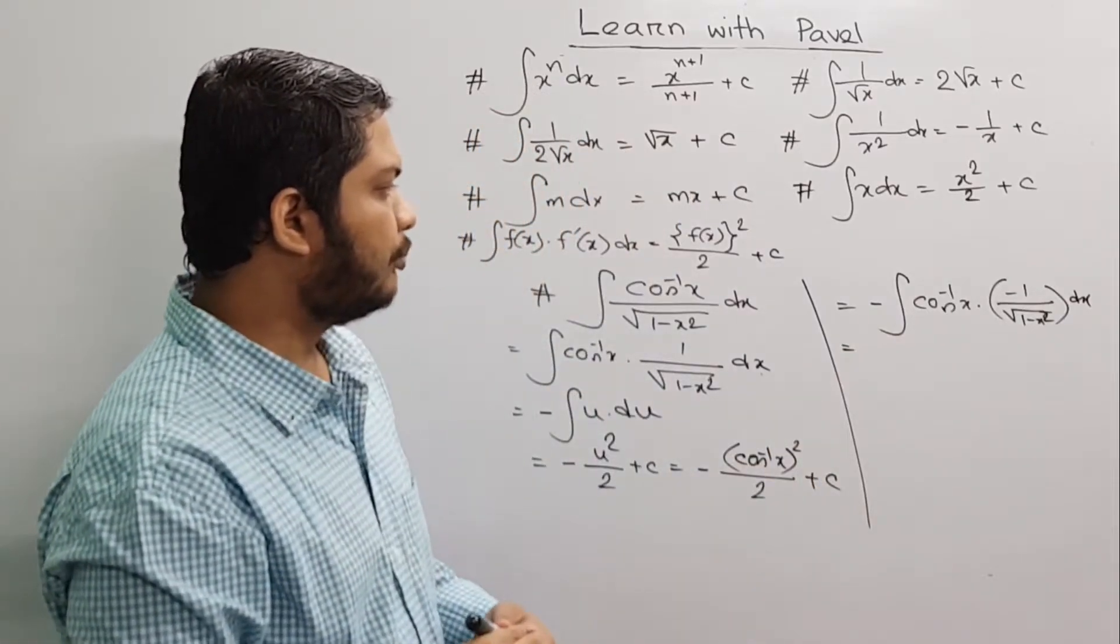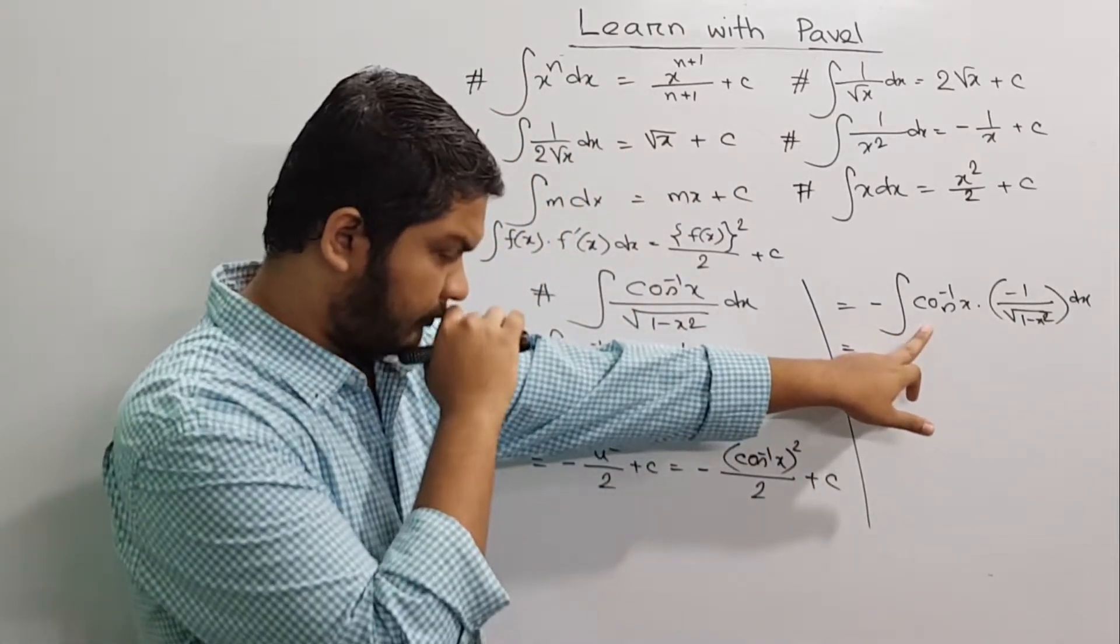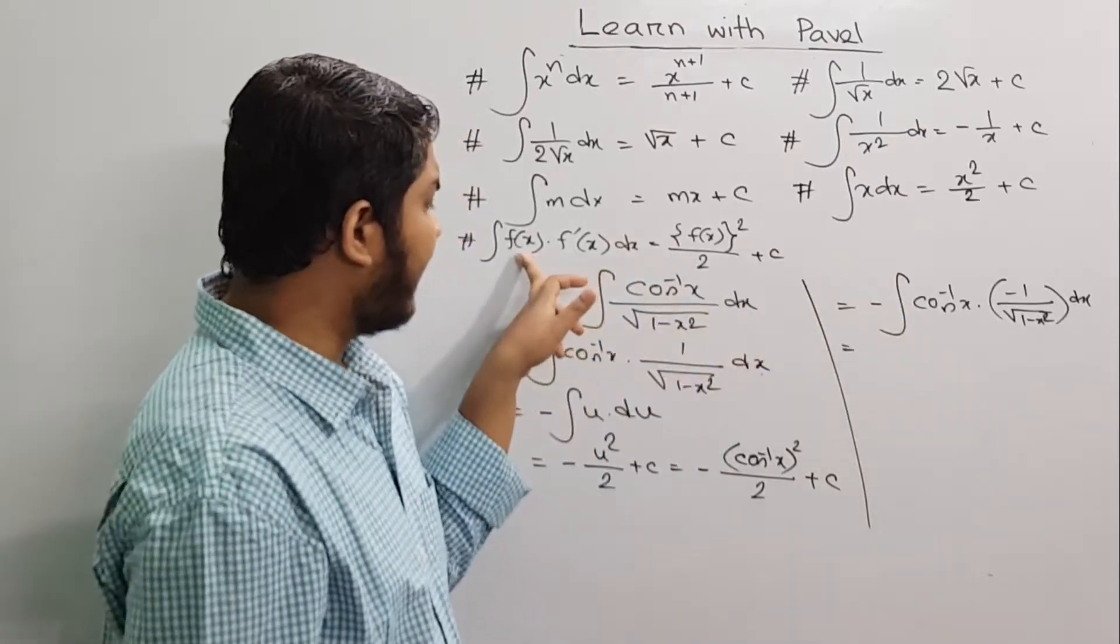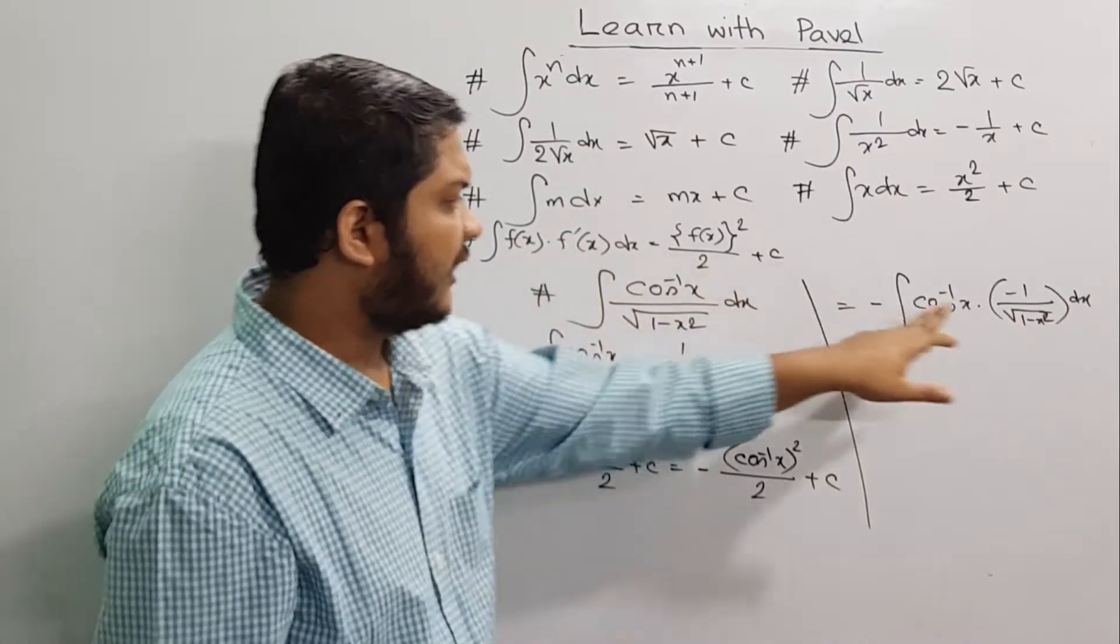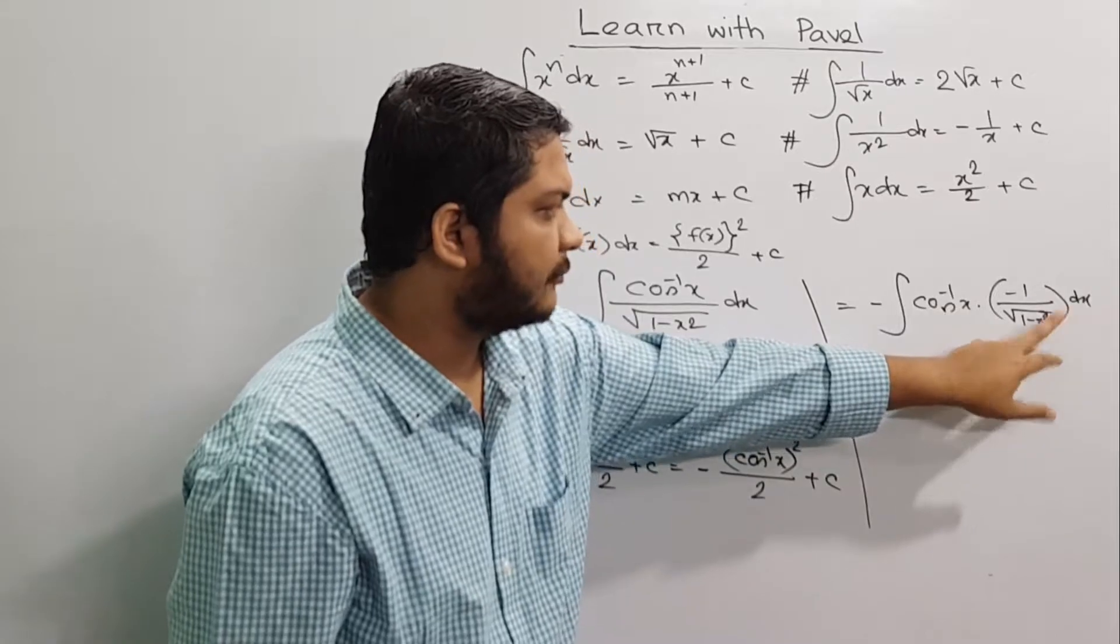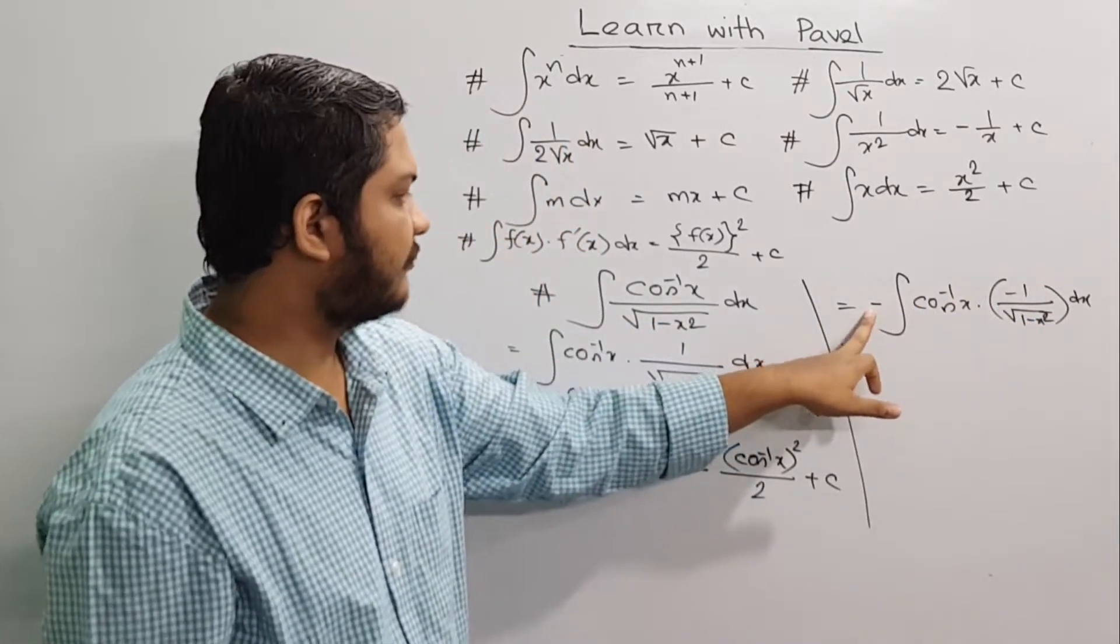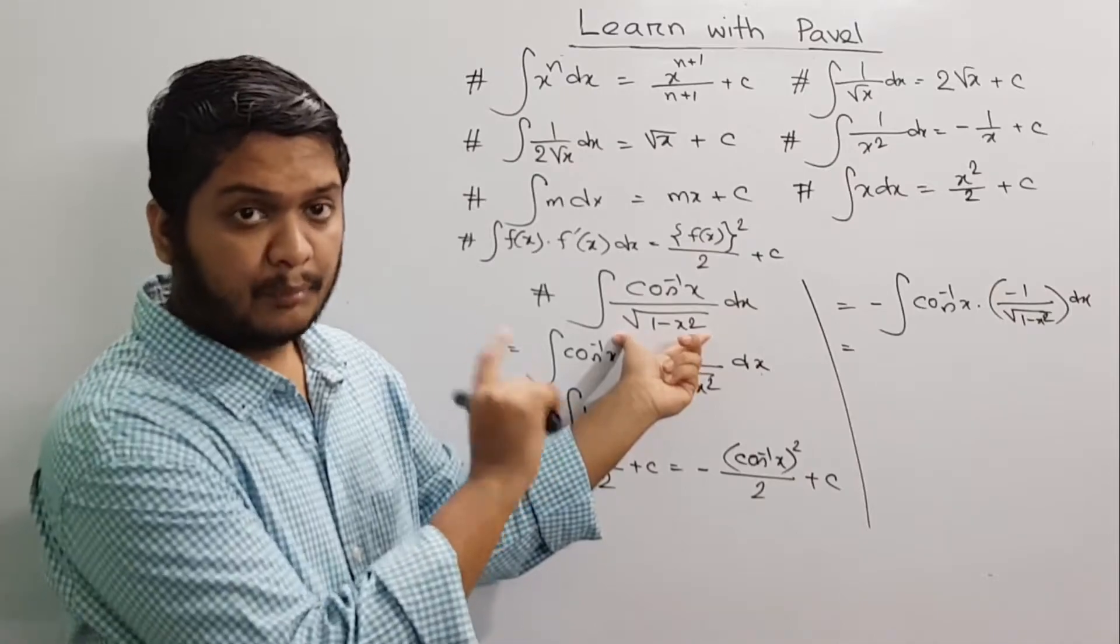So this is very clear. If we have f of x, we have differentiation of u. So we have minus and minus. Ultimately, we have the same form question.